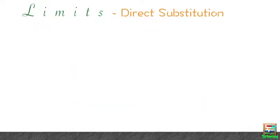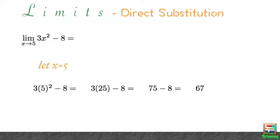The first method is direct substitution. For example, if we want to find the limit as x approaches 5 of this polynomial equation, we can simply let x equal 5 and solve the expression. As long as you get an answer that is defined, you've found your limit.